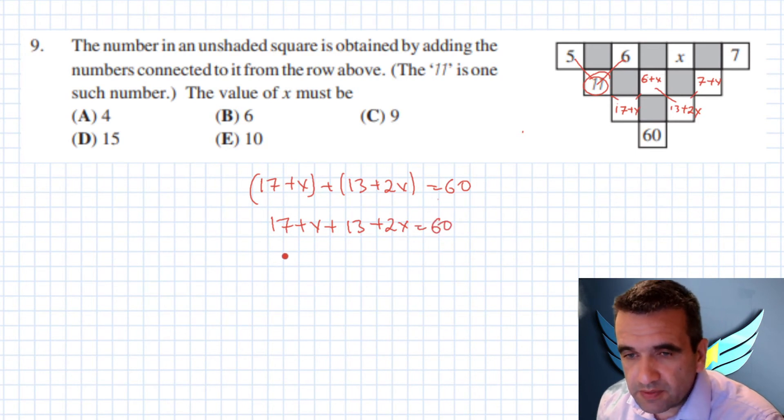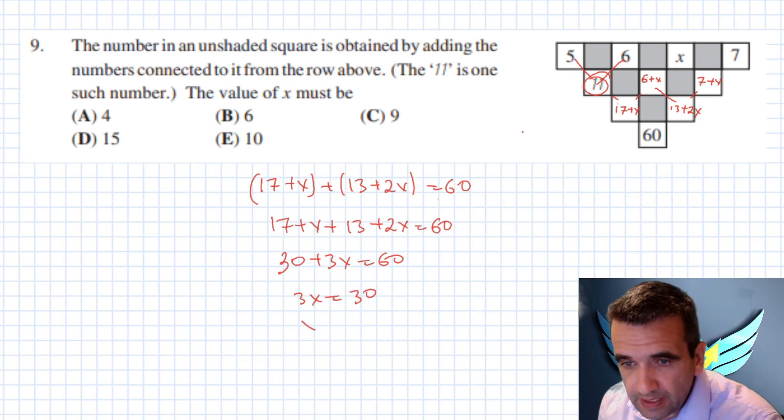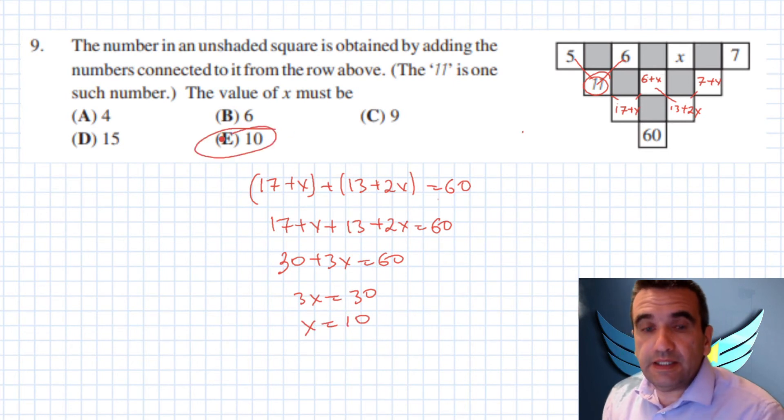So 17 plus 13 is 30 plus 3x equals to 60. From here 3x equals to 30, and x equals to 10. So correct answer is 10.